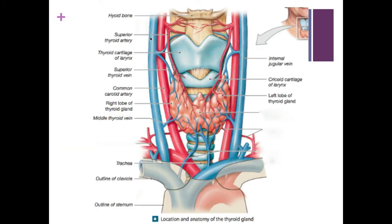Here we'll trace the common carotid artery up, and right about here is where that split happens. We trace the external carotid artery up and then see the superior thyroid artery, which dives all the way down to the top of the thyroid gland.